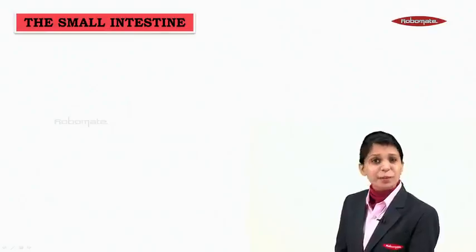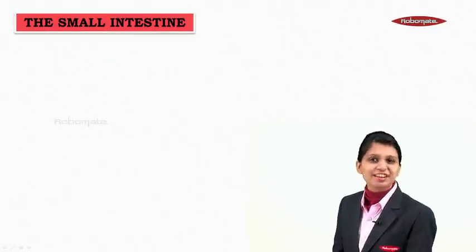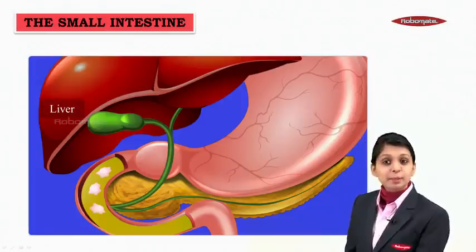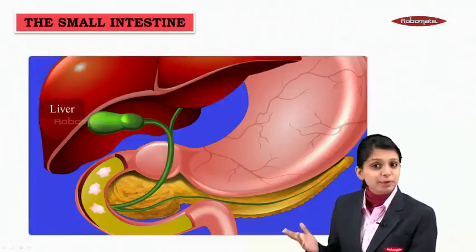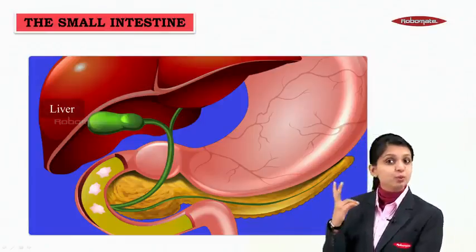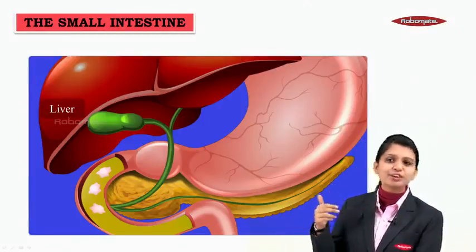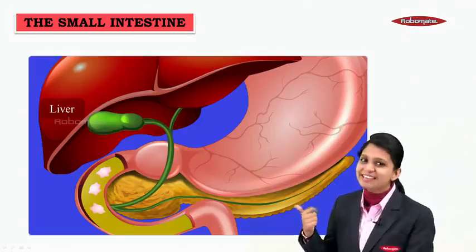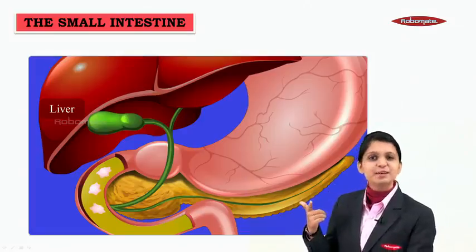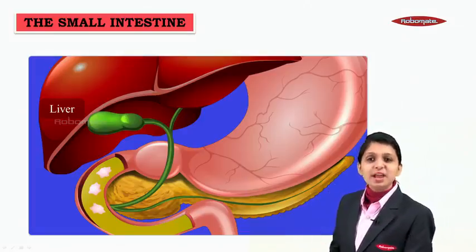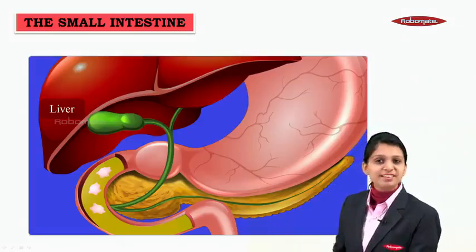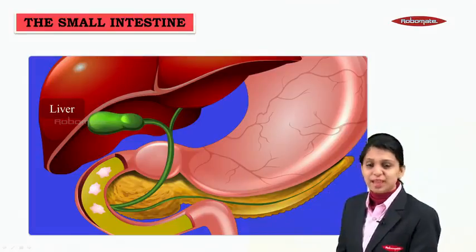Let us continue our discussion regarding the small intestine. In the small intestine, at the beginning of the chapter, we said there are two large digestive glands — the first among which was the liver and the second is the pancreas. Let us see about these two digestive glands in this module.